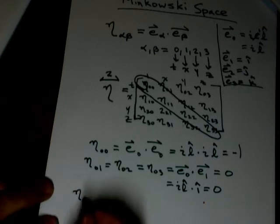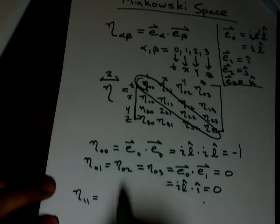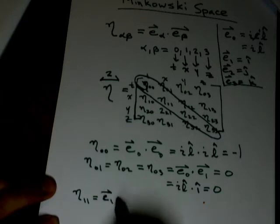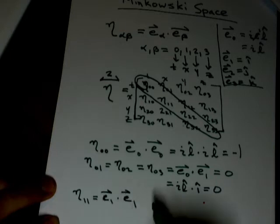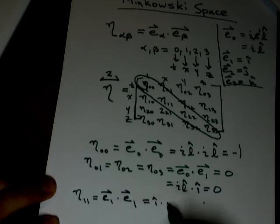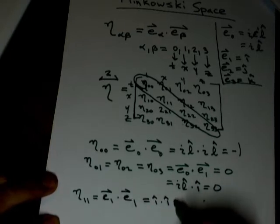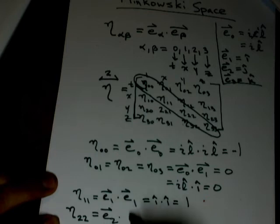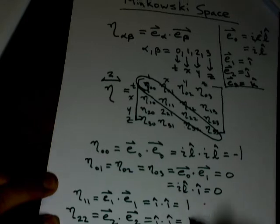So eta 1 1. Eta is going to equal e sub 1 dot e sub 1, which is i hat dot i hat, which is 1. And eta sub 2 2, which is e sub 2, e sub 2 basis vector, which is j hat dot j hat. So it's equal to 1.